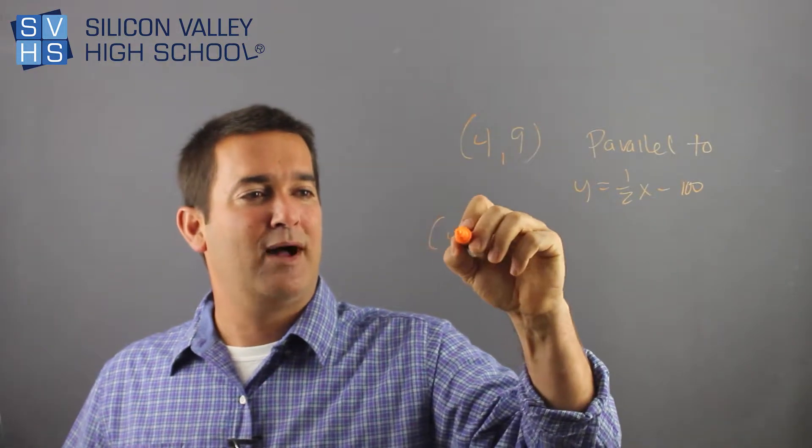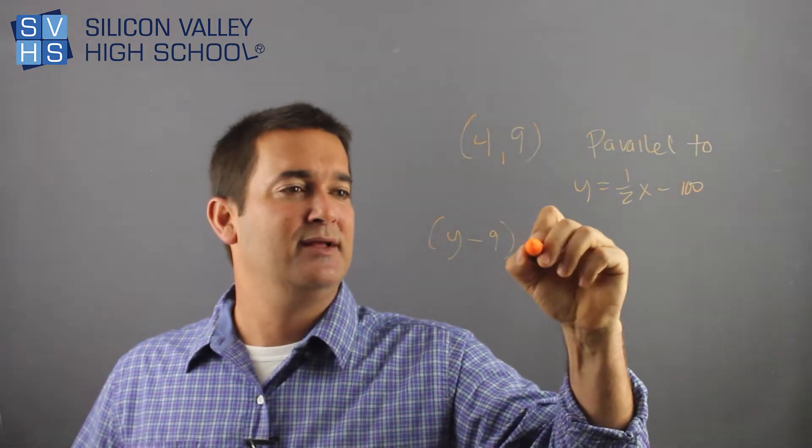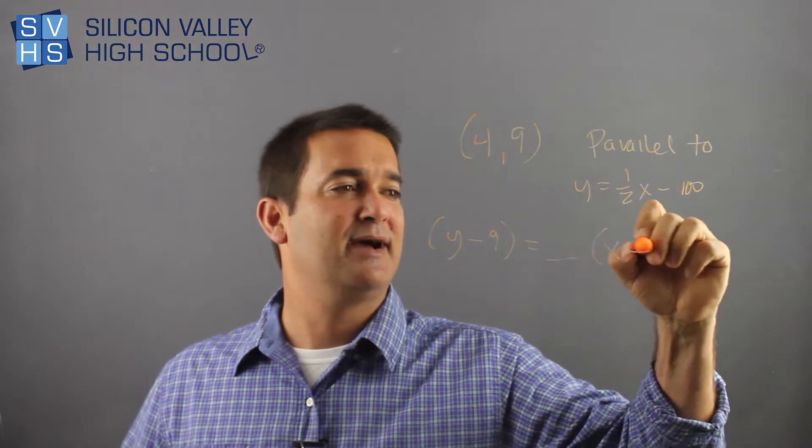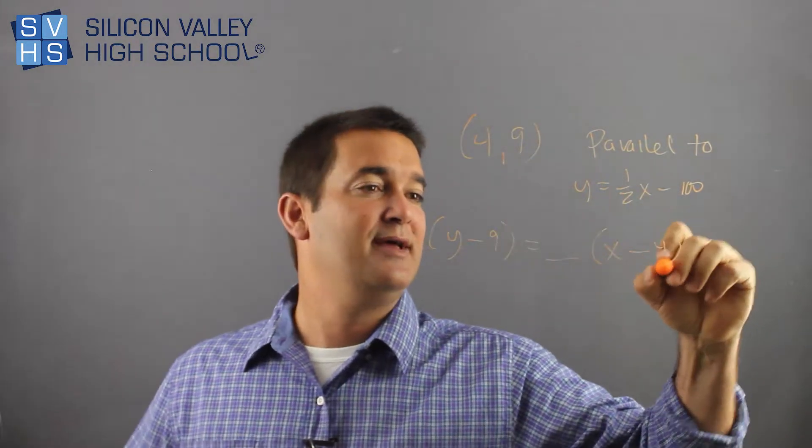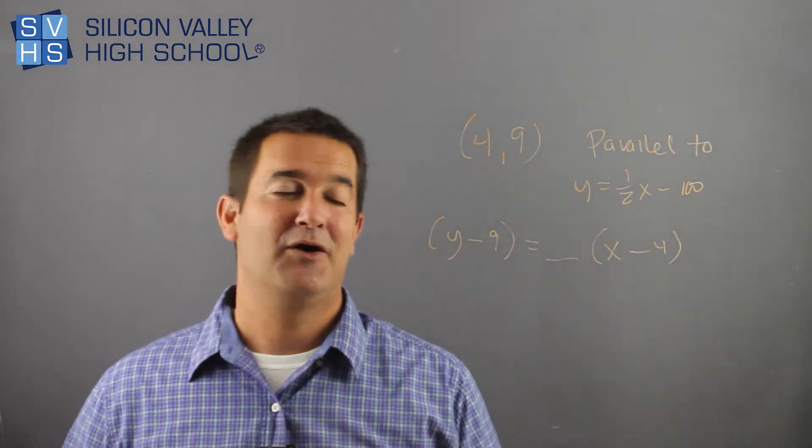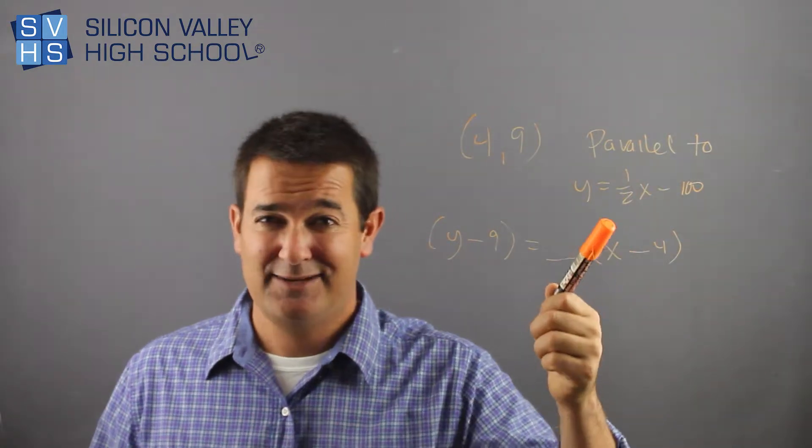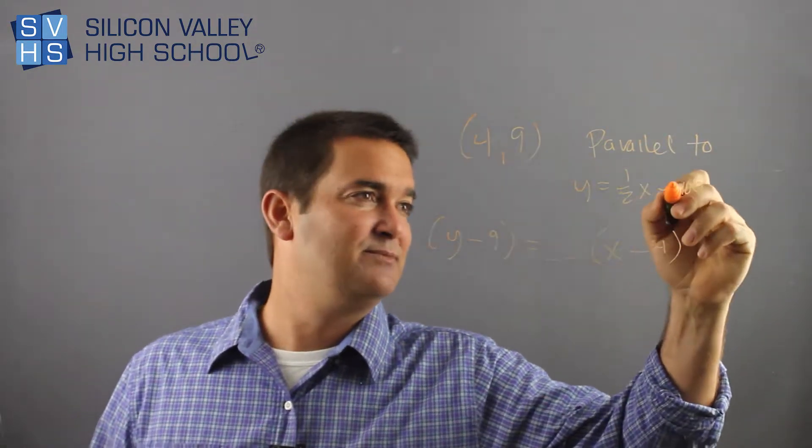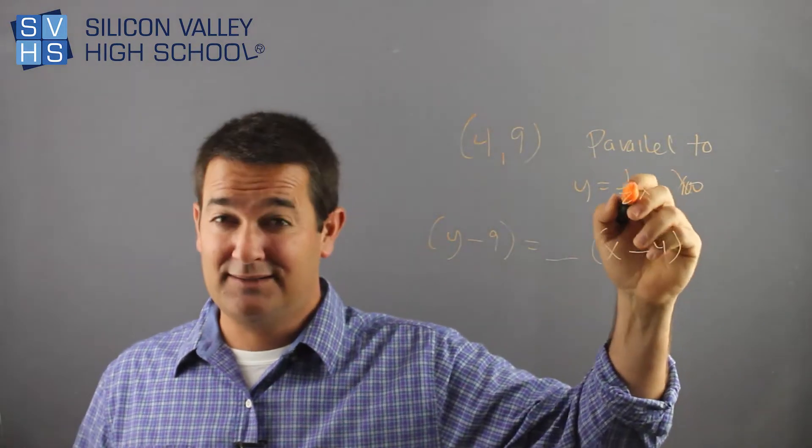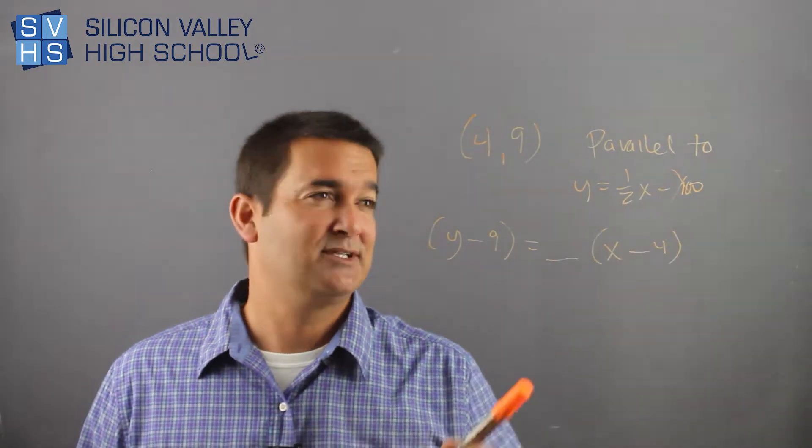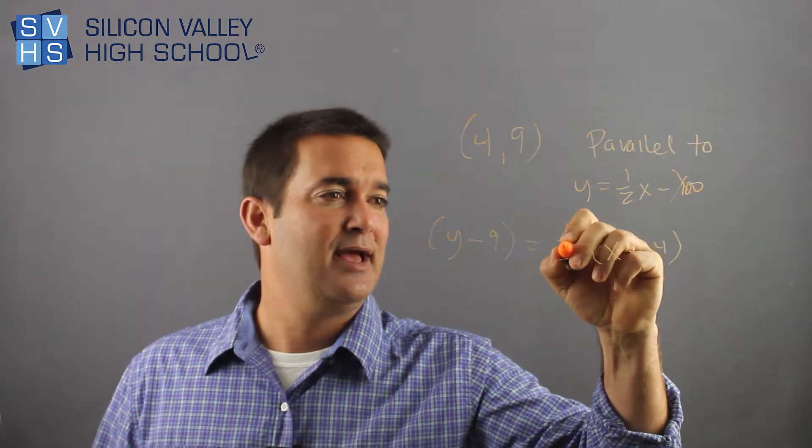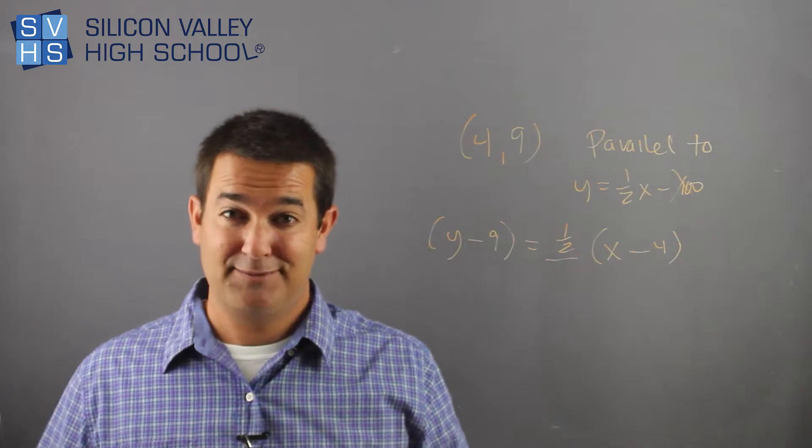So again, you have Y minus the Y, which is 9, equals slope times X minus the X value, which is 4. Pause. What is my slope? If I'm parallel to this random guy, I have nothing to do with his B, I don't care about that, but I'm parallel to him, that means we share the same slope, so I just take his slope and borrow it for my problem, and I'm totally done.